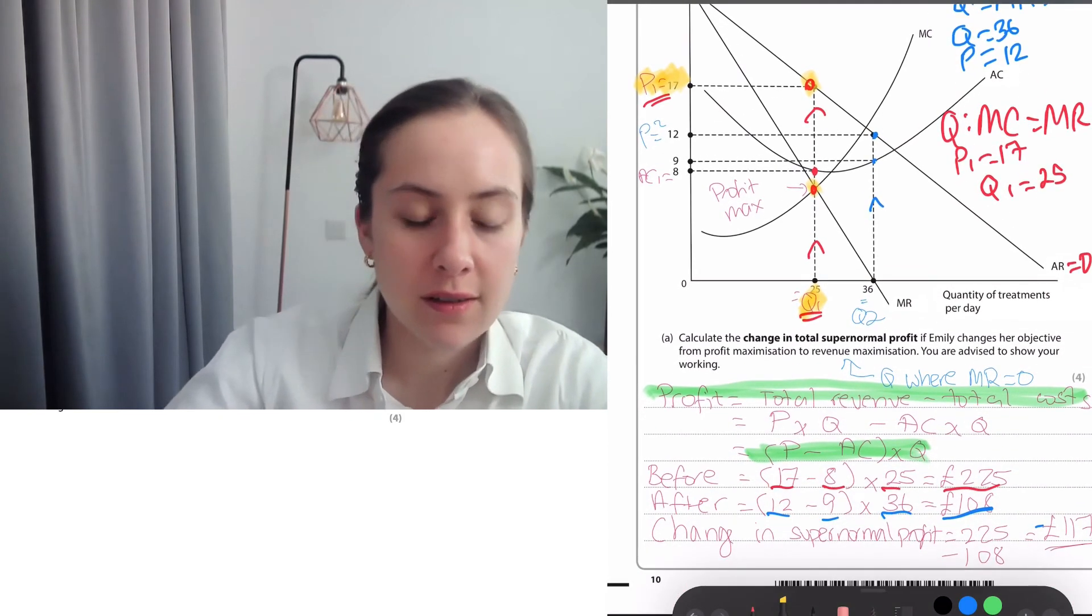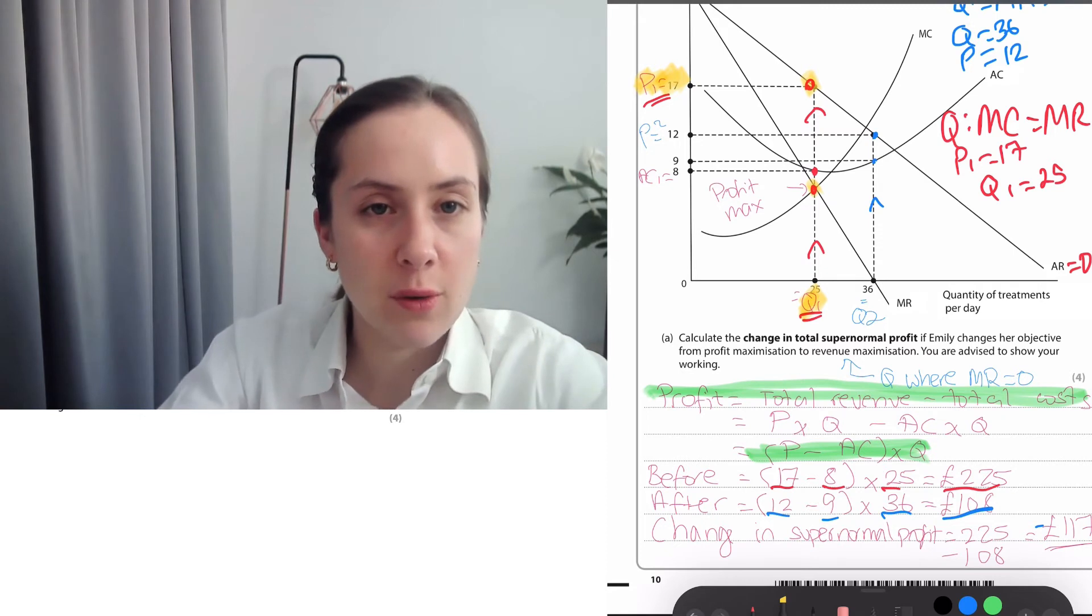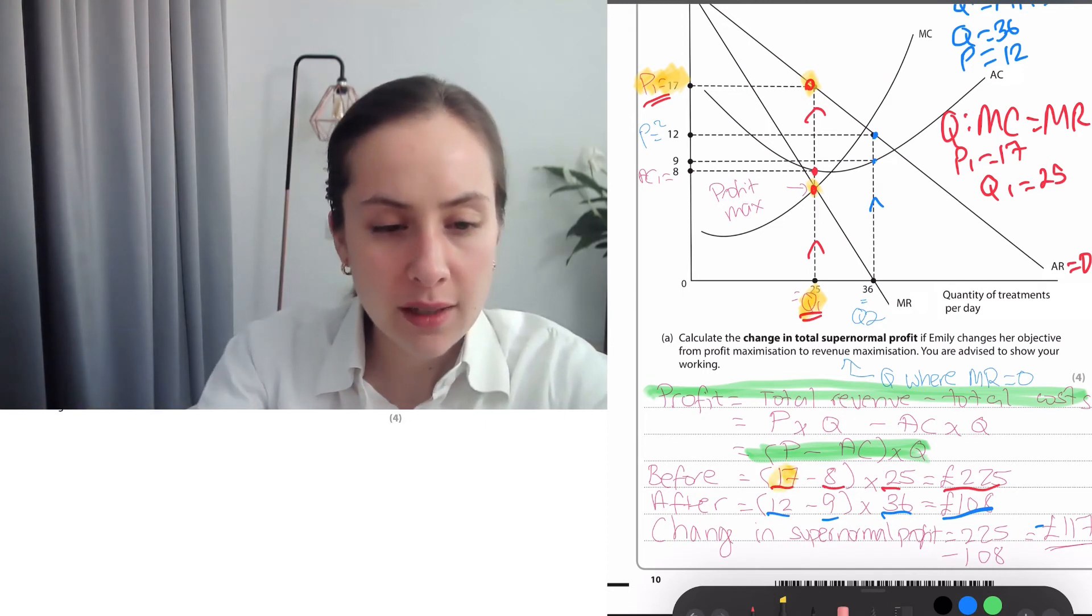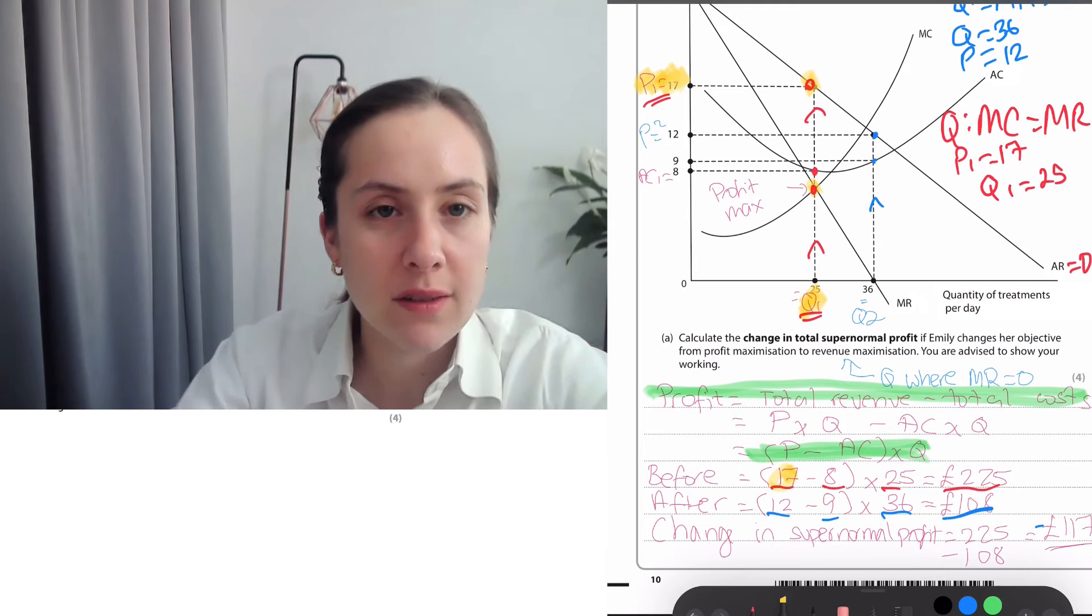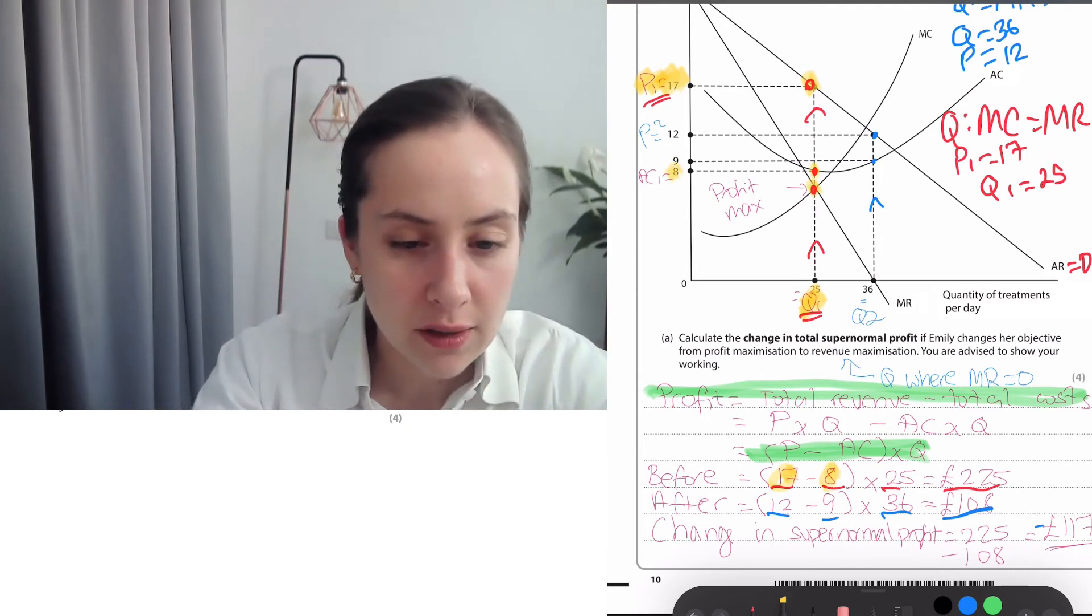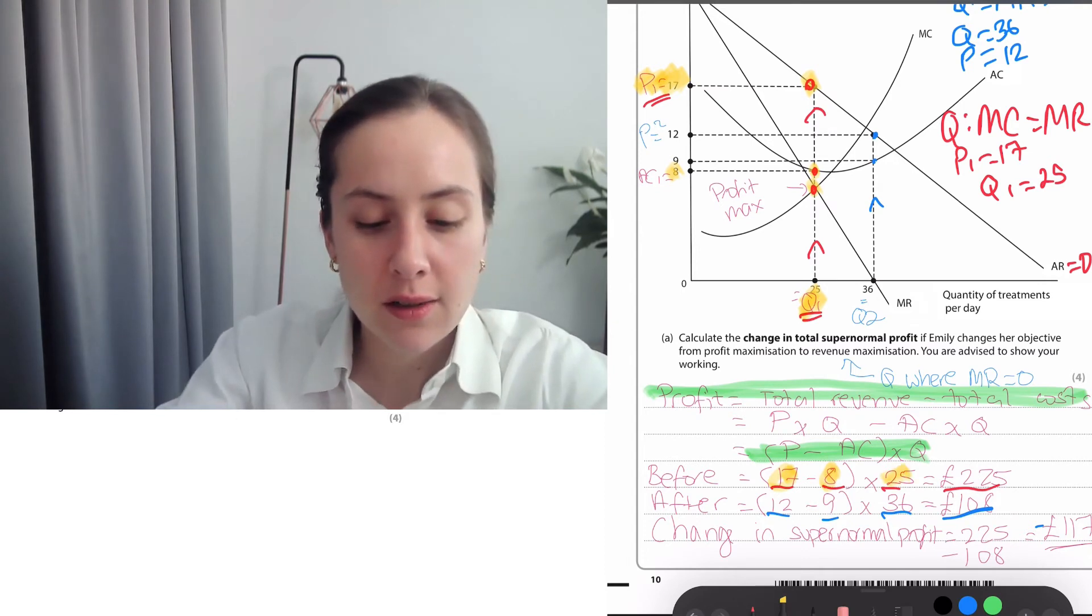To work out the profits that she made originally, I put it through this profit equation: revenue minus costs. That can be simplified down to P minus AC times Q. And that means that the original price of 17 minus the costs—we look at the average cost curve there is 8 originally—times the units of 25 sold gives us the profits of 225.